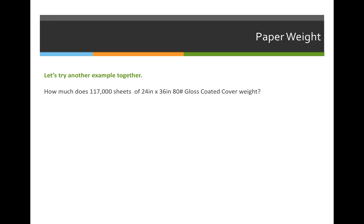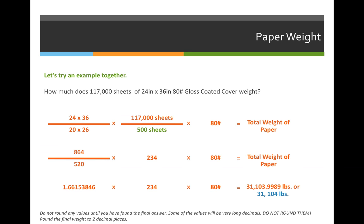Let's take a look at the weight of the paper in this example. If we fill out the formula, we'll take the size of the sheet of paper we're using, which is 24 by 36, and we'll divide it by the basic size of gloss coated cover weight stock. That falls into the cover category, so we'll divide by 20 by 26, because that is the basic size of cover weight paper.